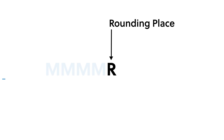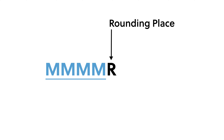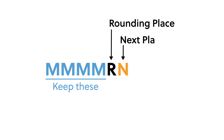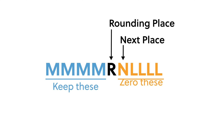Every digit to the left of the rounding place is more significant, indicated by m, so we keep it. The next digit to the right, indicated by n, and all the remaining digits to the right are less significant, indicated by l, so we zero them out.